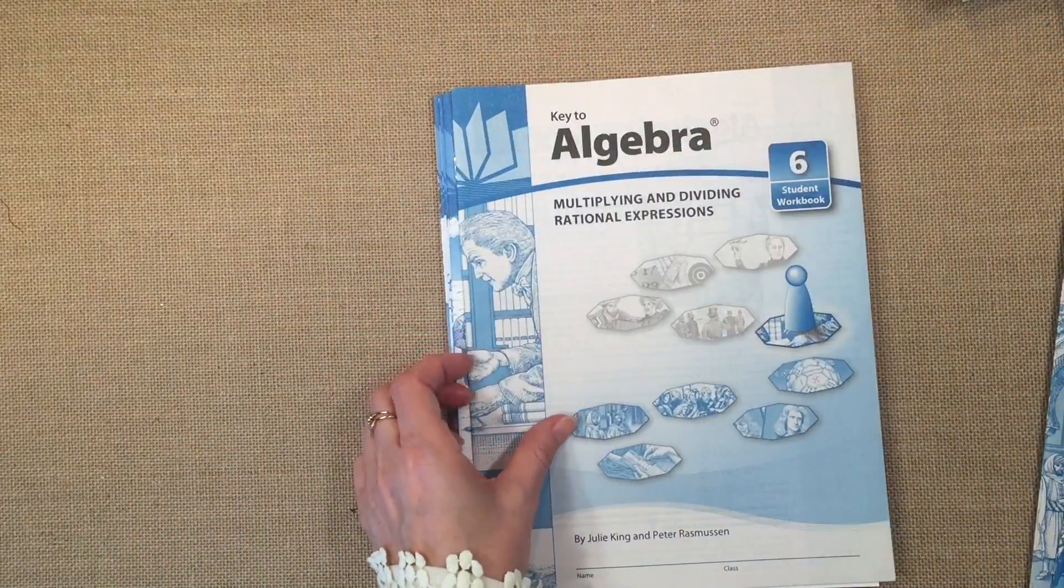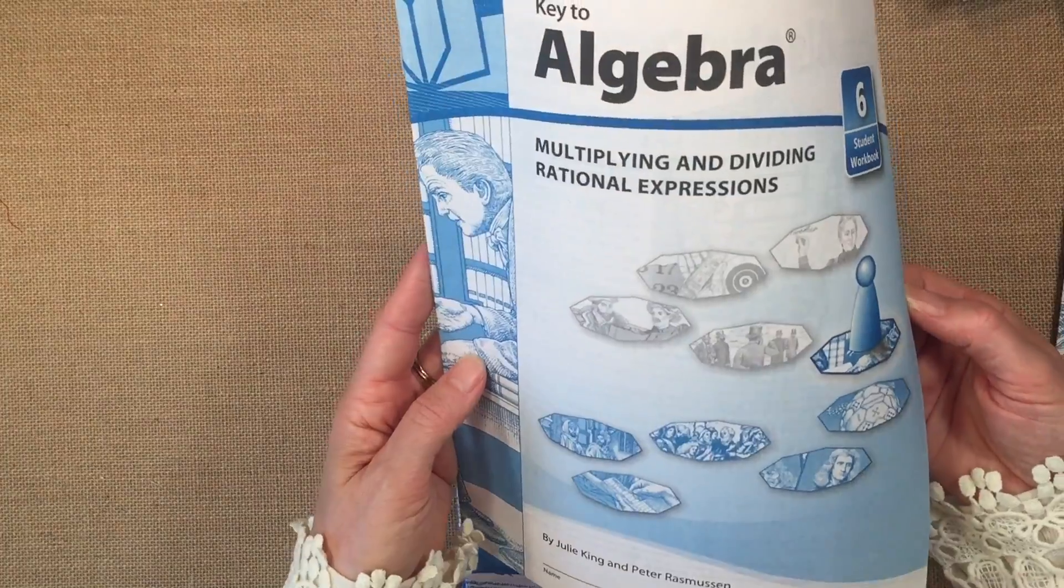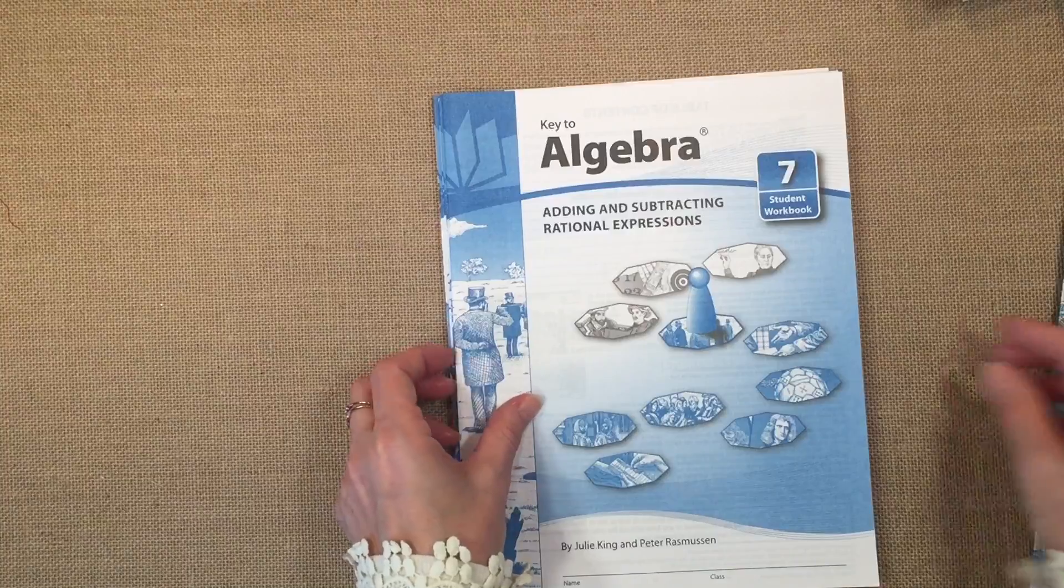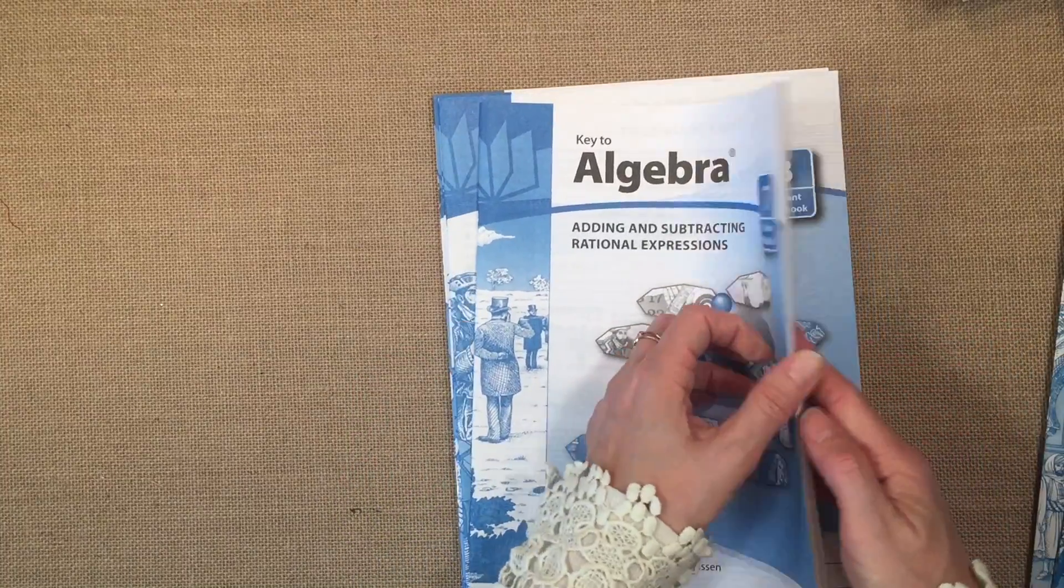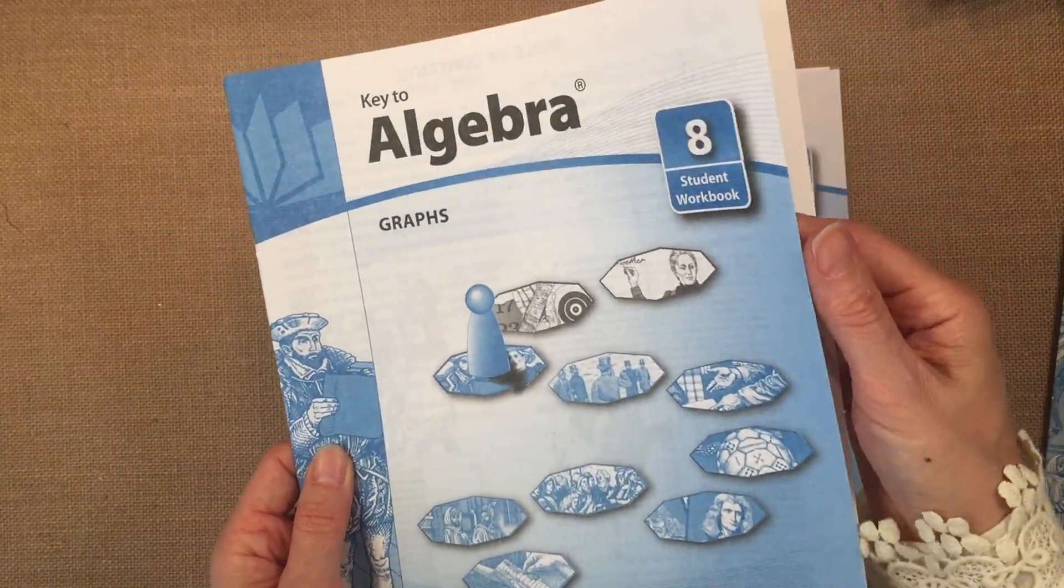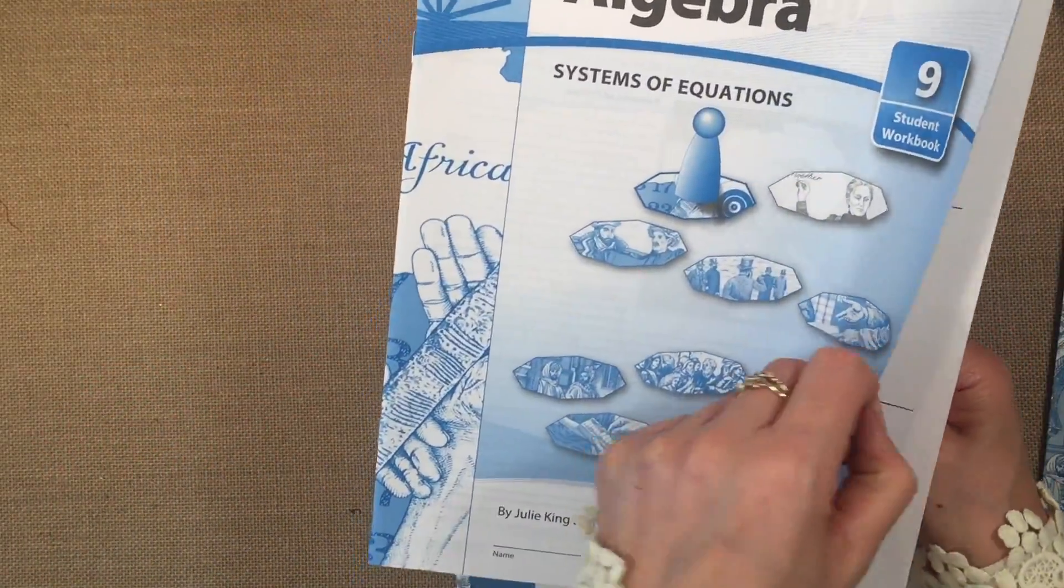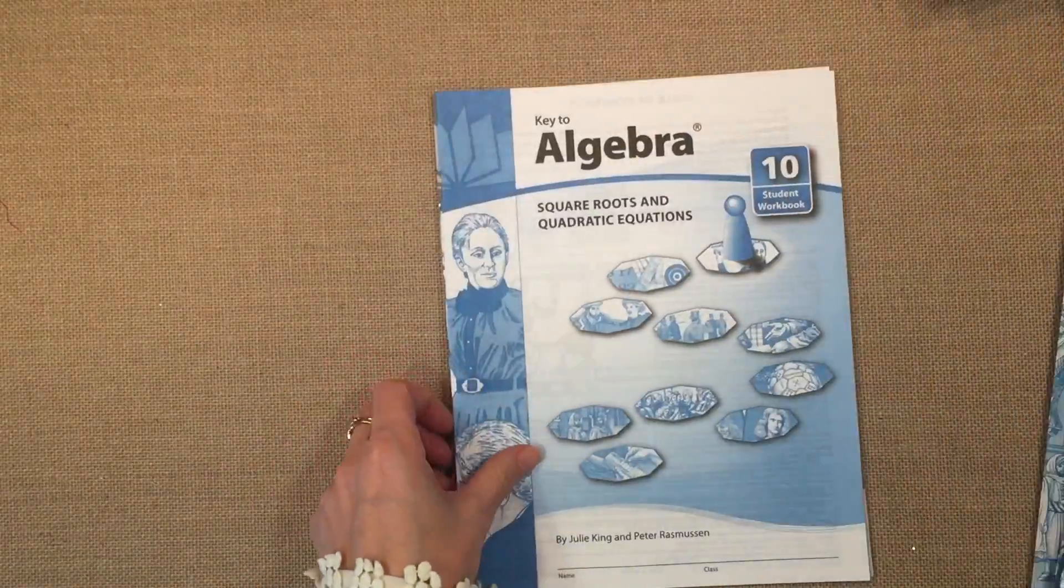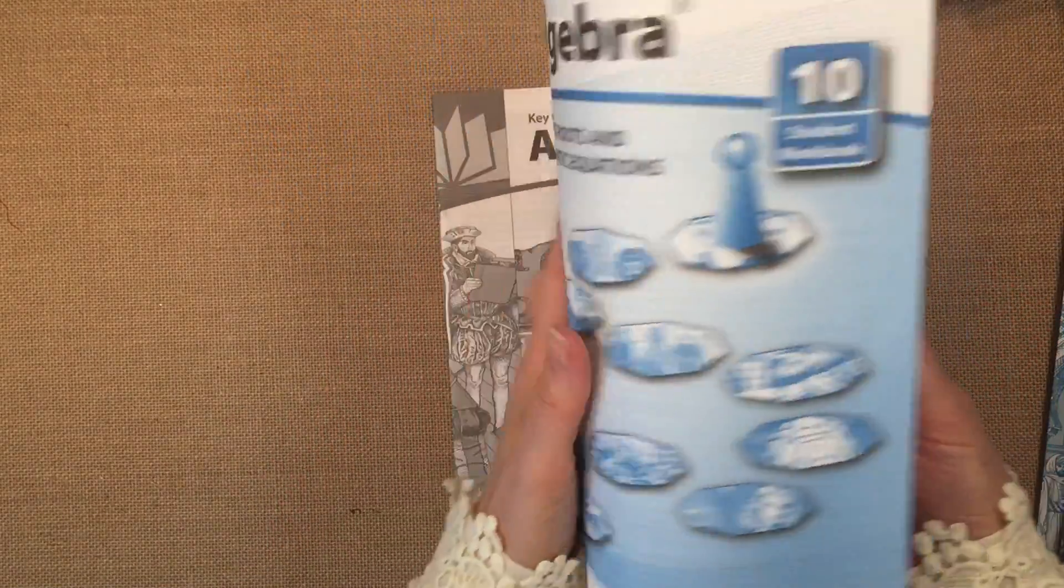So this was rational numbers. We have multiplying and dividing rational expressions. Then we have adding and subtracting rational expressions. And then book nine is systems of equations. And then 10 is square roots and quadratic equations.